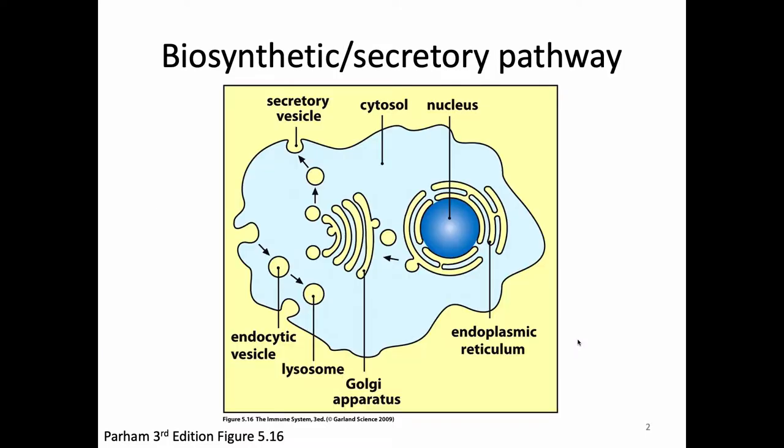The first is to remind you of the biosynthetic secretory pathway, sometimes known as the endocytic pathway. On this picture of the cell, the cell is divided into regions of different colors. The nucleus is one color and is its own special compartment. The rest of the cell is divided into lightish blue, which is the cytoplasm, and yellow, which is the outside of the cell — all of which is across a membrane from the cytoplasm.